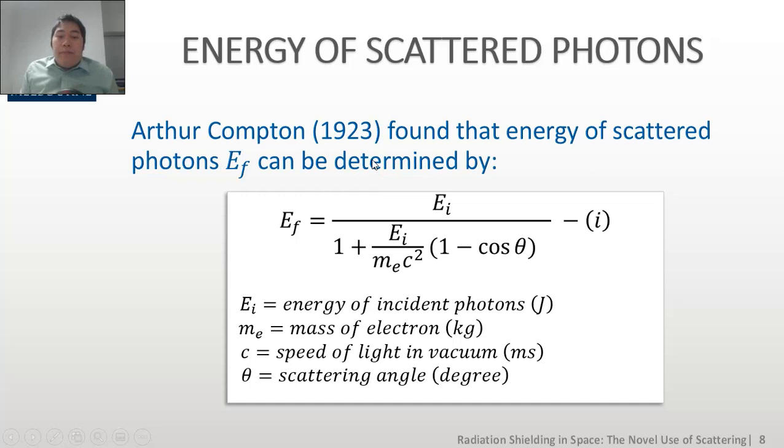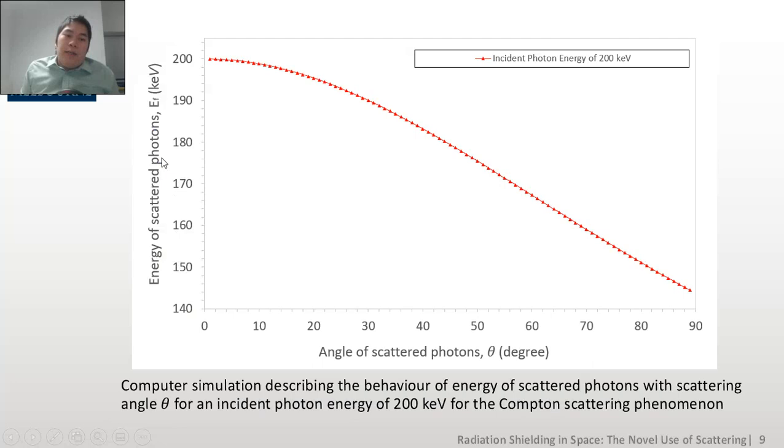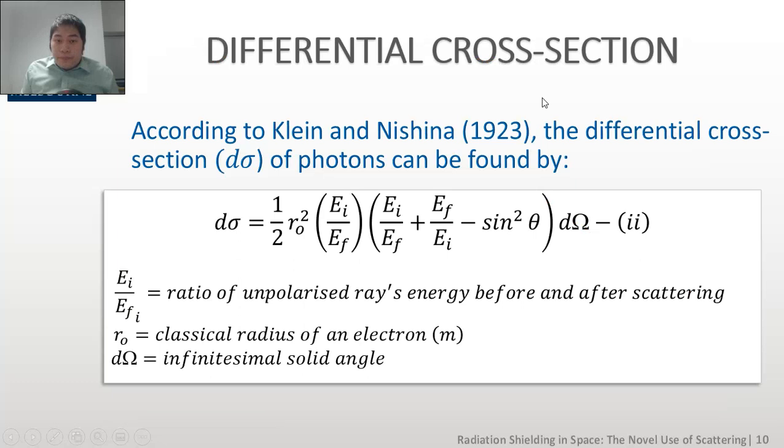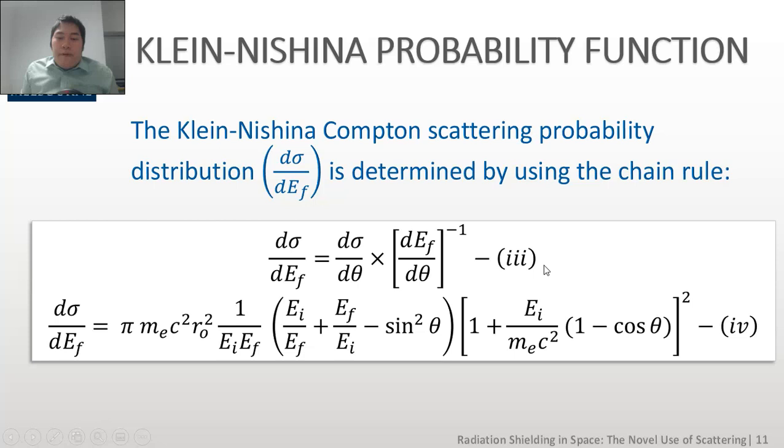By using the relationship between the scattered energy of the photons Ef and the scattering angle theta that was discovered by Arthur Compton in 1923, a graph of scattered photons against the angle of scattered photons theta is plotted for an incident photon energy of 200 electron volts. Then by using the definition of the differential cross-section d sigma by d omega that was discovered by Klein and Nishina in 1929, and then applying the chain rule, the Klein-Nishina Compton scattering probability distribution d sigma by d Ef is derived as shown in equation 4.